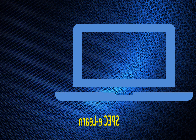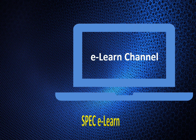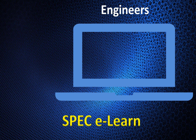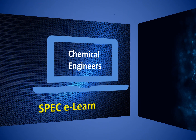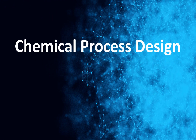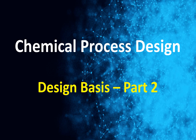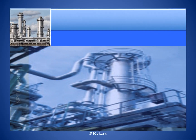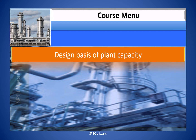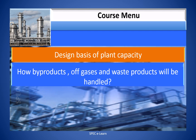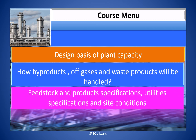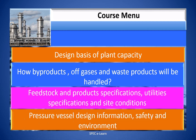Hello everyone. Welcome to SPECT eLearn, the online learning channel dedicated to chemical engineers. Chemical Process Design — Design Basis Part 2. In this video course, you will learn the design basis of plant capacity, how by-products, off-gases, and base products will be handled, feedstock and product specifications, utility specification and site conditions, preservation design information, and safety and environment.